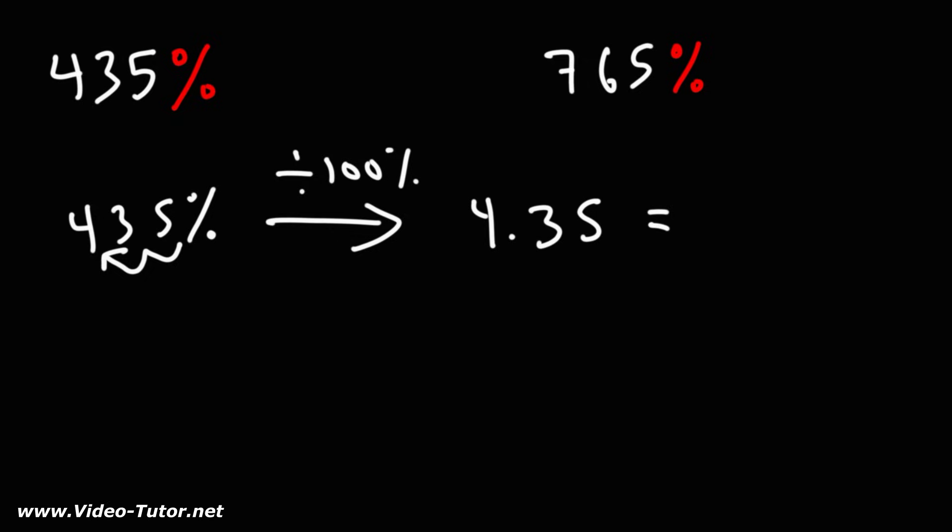Now, 4.35, you want to break it up into a whole number and a decimal. This is 4 plus 0.35.